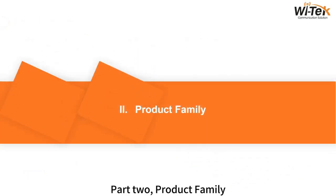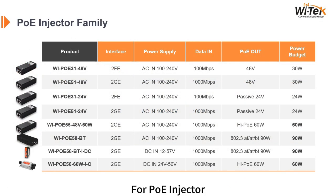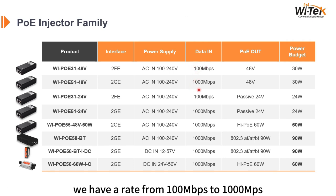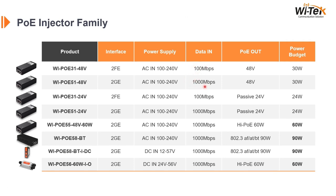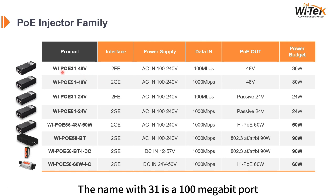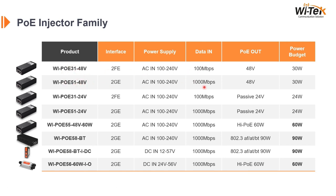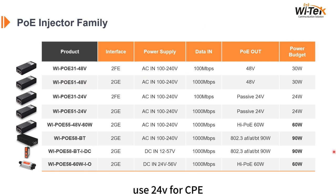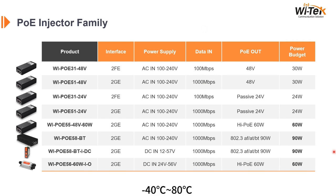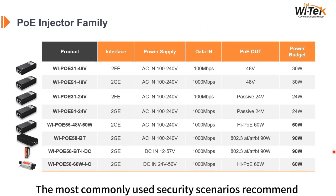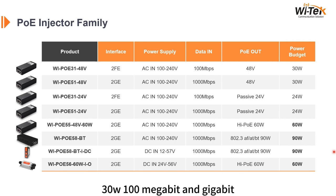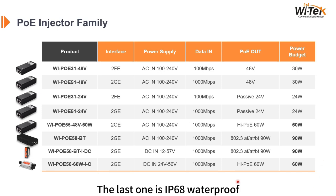Part 2: Product Family. For PoE injectors, we have a range from 100 megabits per second to 1000 megabits per second. The name with 31 is a 100 megabit port, and 51 is a gigabit port. 48 volts is standard; 24 volts is non-standard — use 24 volts for CPE. The last two are industrial grade, rated minus 40 to 80 degrees Celsius. The most commonly used security scenarios recommend 30 watts, 100 megabit and gigabit. The last one is IP68 waterproof.